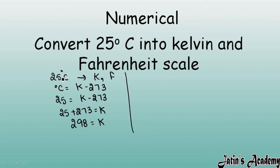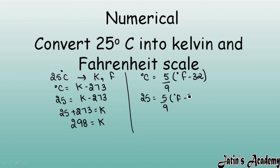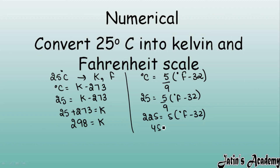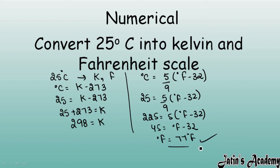Now convert 25 degree Celsius into Fahrenheit using the relation: degree Celsius equals 5/9 times (degree Fahrenheit minus 32). Substituting: 25 equals 5/9 times (Fahrenheit minus 32). Multiply both sides by 9: 225 equals 5 times (Fahrenheit minus 32). Dividing by 5: 45 equals Fahrenheit minus 32, so Fahrenheit equals 45 plus 32 equals 77 degree Fahrenheit. So 25°C equals 77°F. Clear?